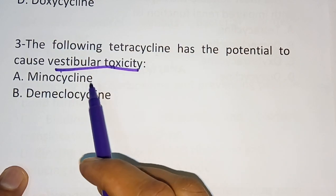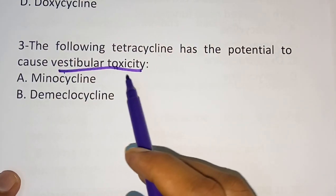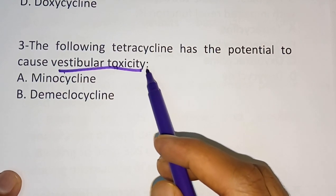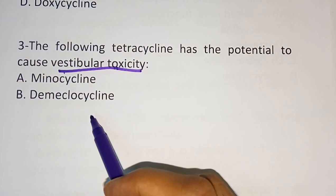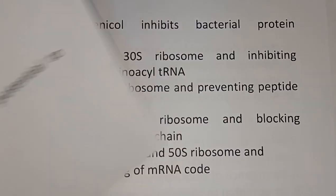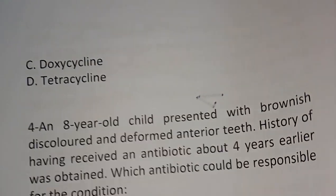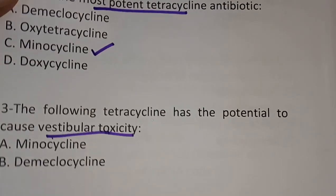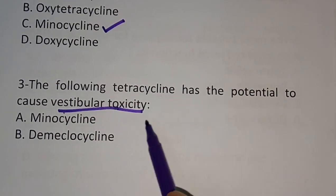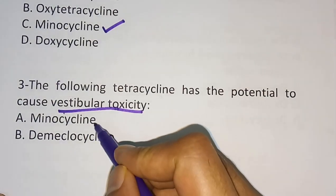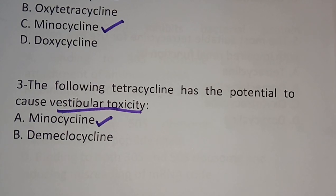The third question: which tetracycline has the potential to cause vestibular toxicity? Option A: minocycline. Option B: demeclocycline. Option C: doxycycline. Option D: tetracycline. The correct answer is minocycline — it has vestibular toxicity as an adverse reaction.